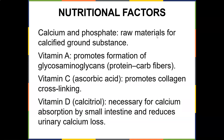Nutrition is very important for bone development. Calcium and phosphate are raw materials for calcified ground substance. Vitamin A promotes formation of glycosaminoglycans. Vitamin C as ascorbic acid promotes collagen cross-linking. Vitamin D — calcitriol — is necessary for calcium absorption by the small intestine and reduces urinary calcium loss. Early nutritional deficiencies may have contributed to serious bone injuries seen in high-level athletes.